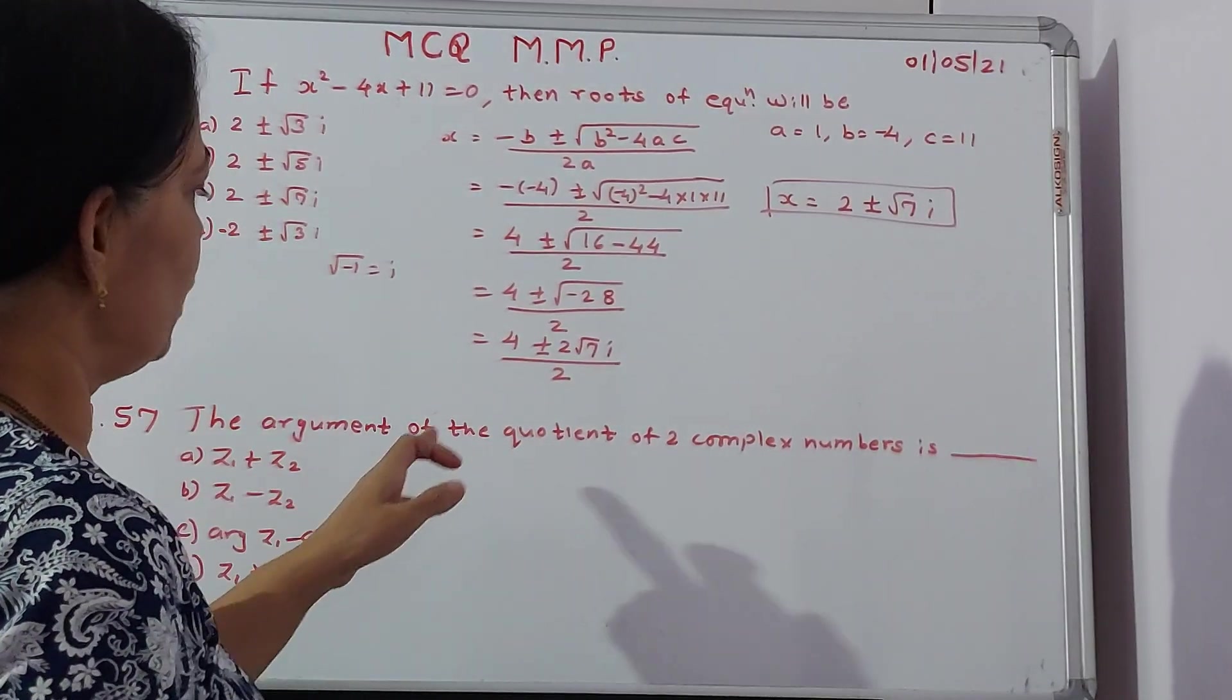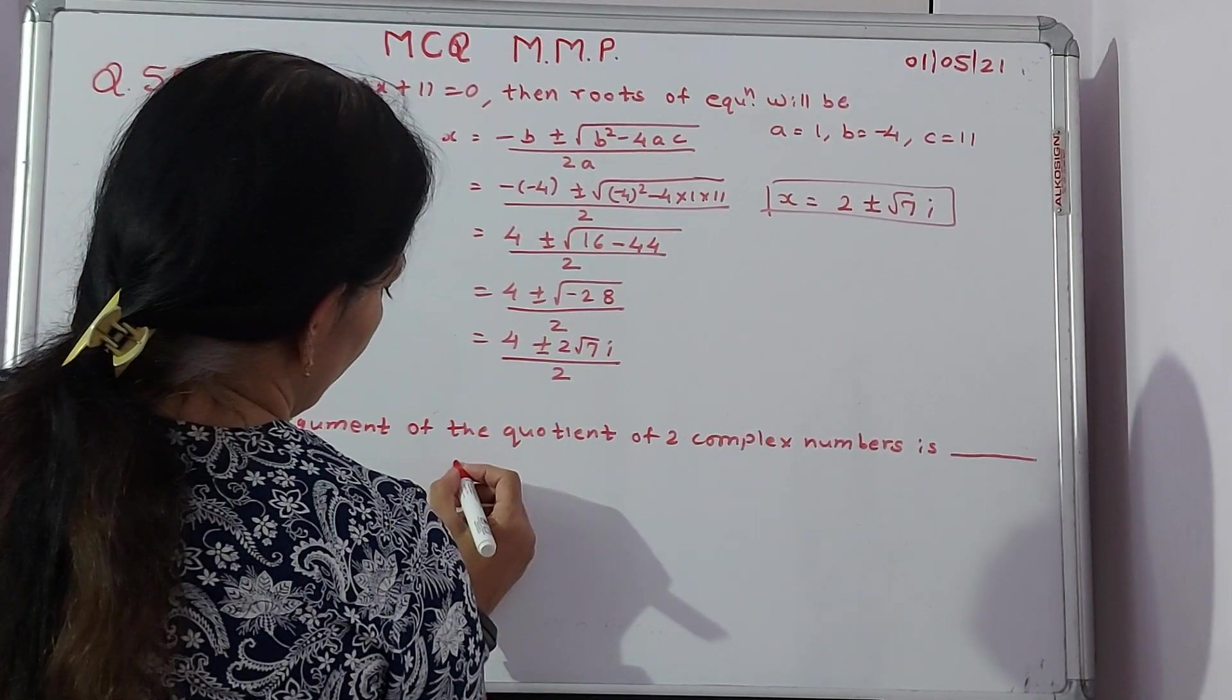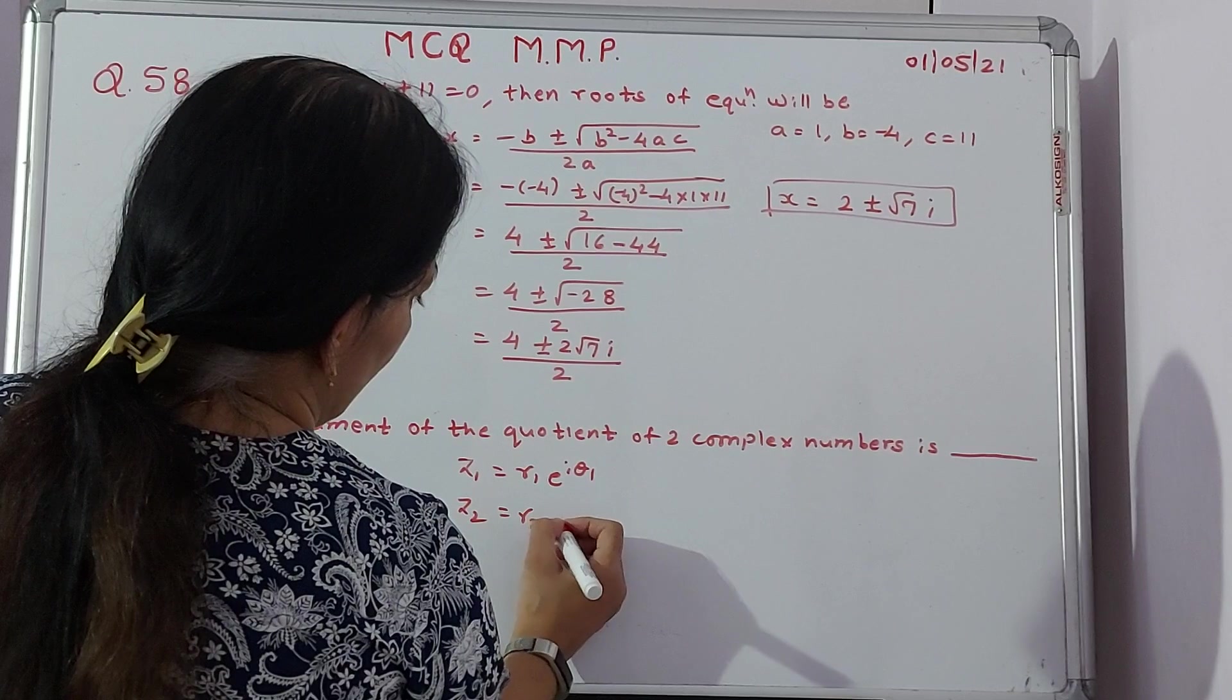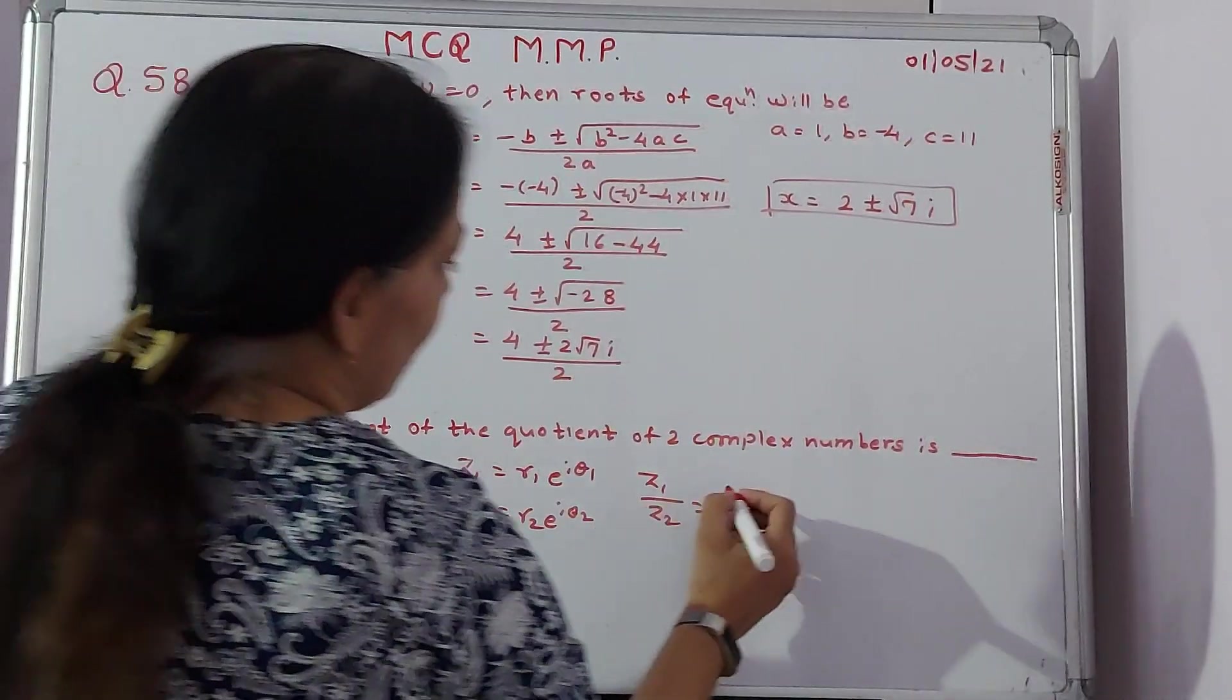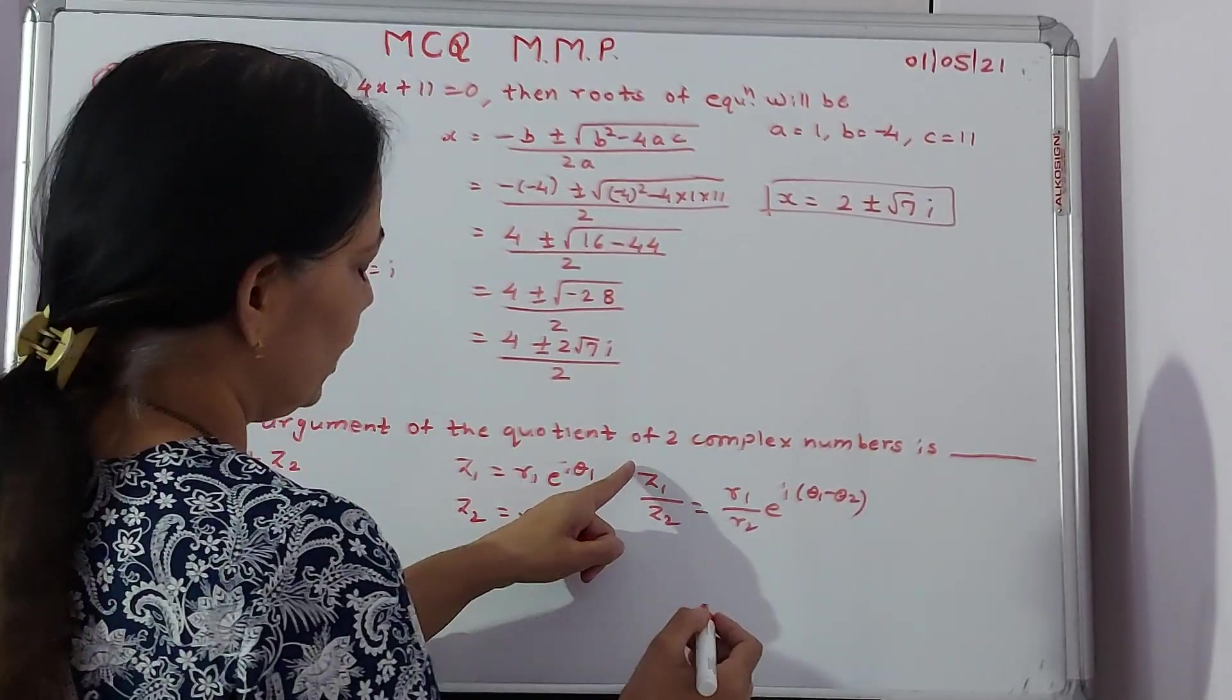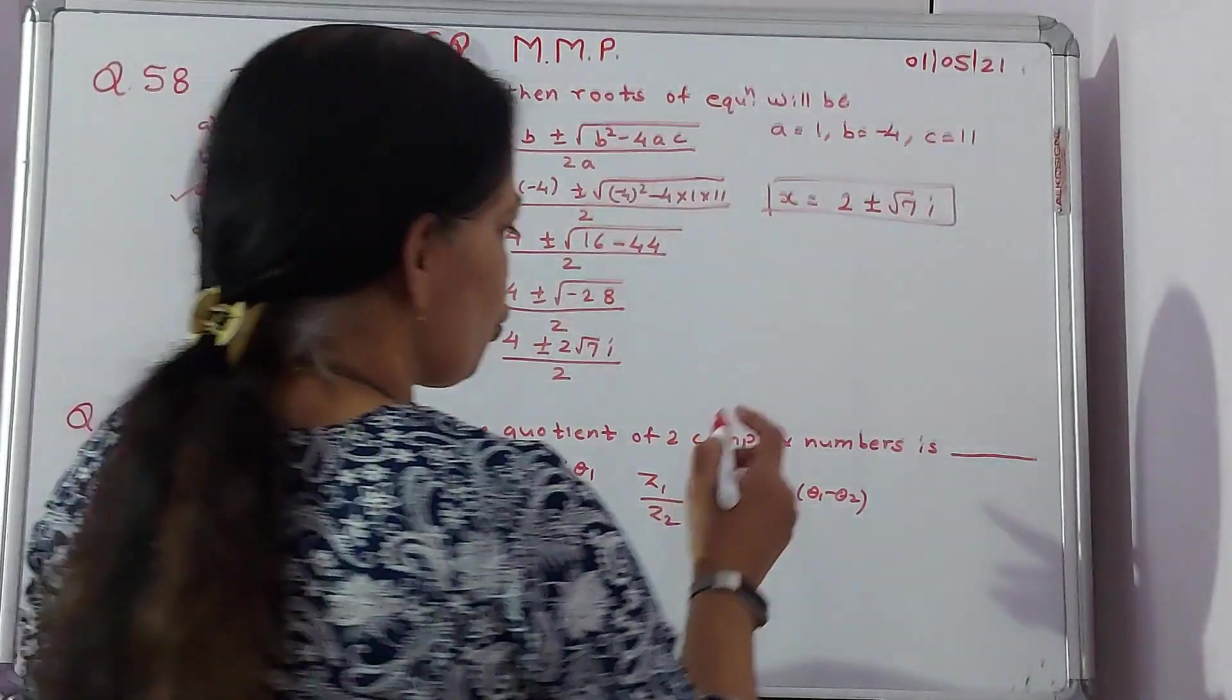Next question is the argument of the quotient of the two complex numbers is. Over here we need to take the quotient. Suppose we say that complex number first is Z1, second is Z2 given by suppose we say R1 e to the power i theta 1 and Z2 is R2 e to the power i theta 2. When you divide them, Z1 by Z2, we say R1 by R2 e to the power i theta 1 minus theta 2. So over here when you take the argument, we can say obviously that it is nothing but arg Z1 minus arg Z2 is a perfect answer.